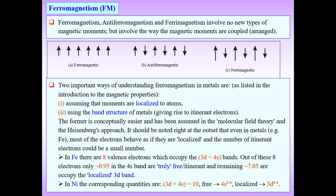Then we discuss ferrimagnetic materials. In ferrimagnetic materials, the directions of moments also change and the magnitude of the moments is also different. So ferromagnetic, anti-ferromagnetic, and ferrimagnetic materials each have distinct moment arrangements — these are the basic distinctions.